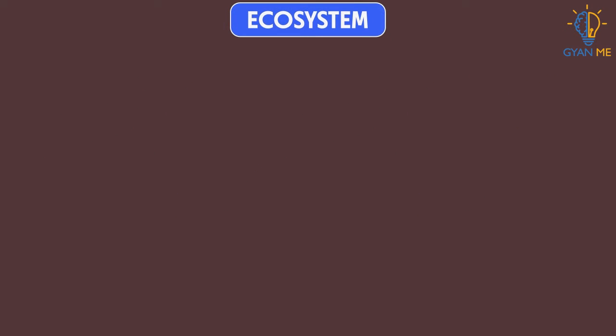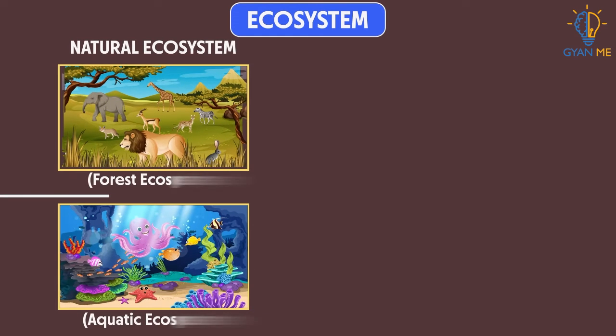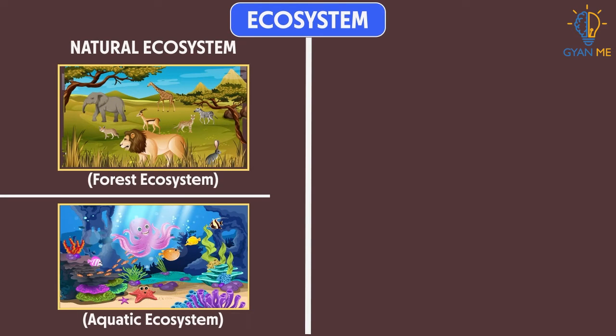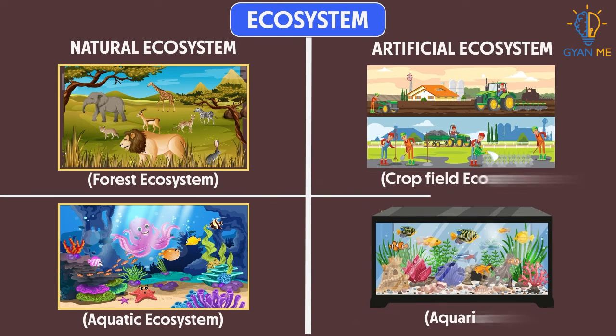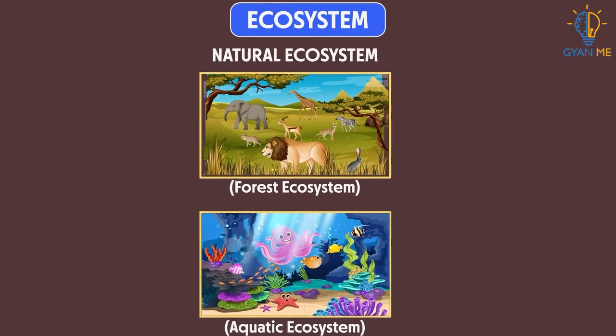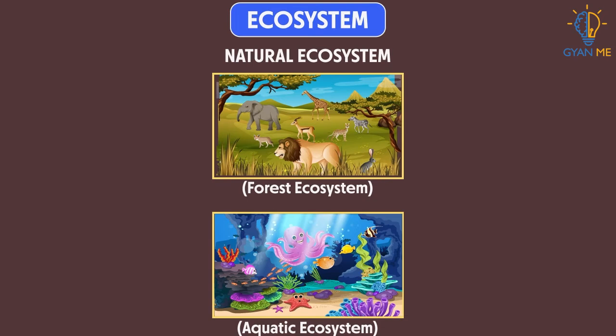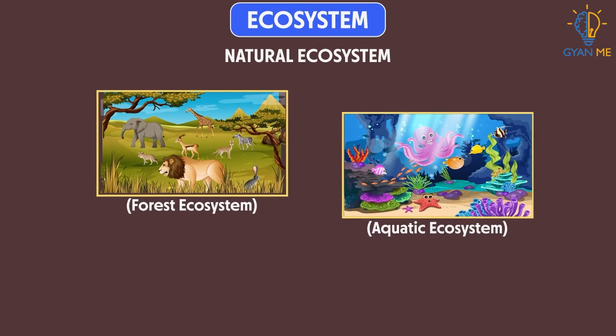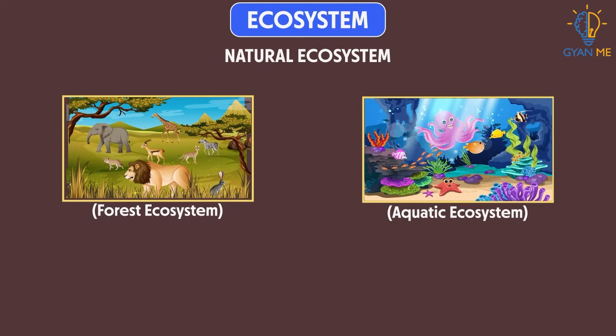Now, students, there are two types of ecosystem: natural ecosystem and artificial ecosystem. Let us understand them in detail one by one, starting with natural ecosystem.